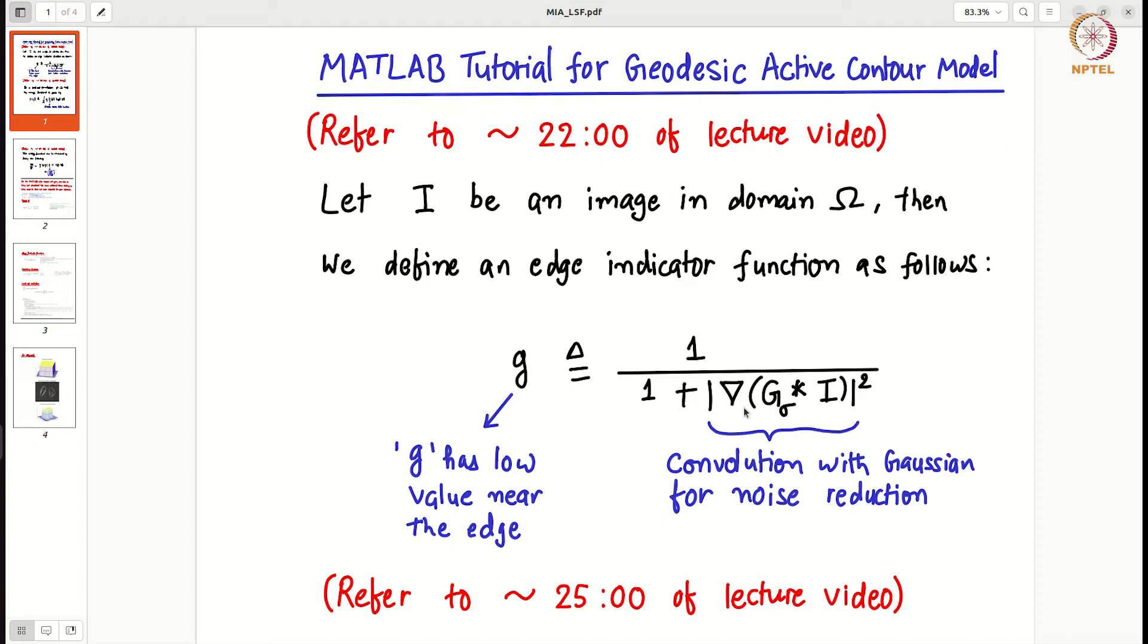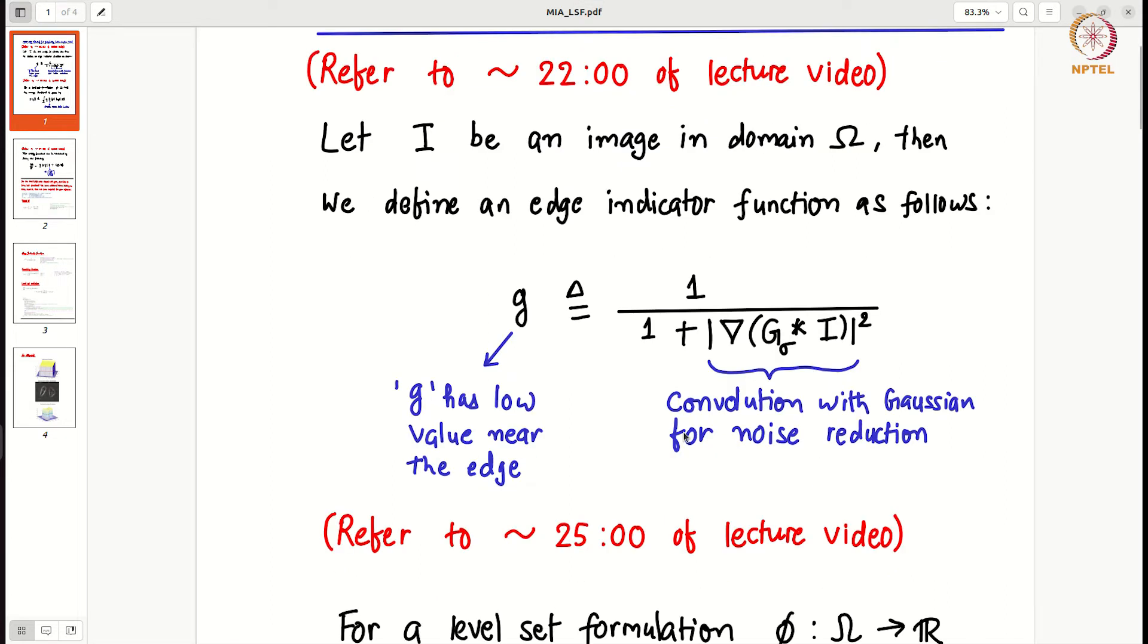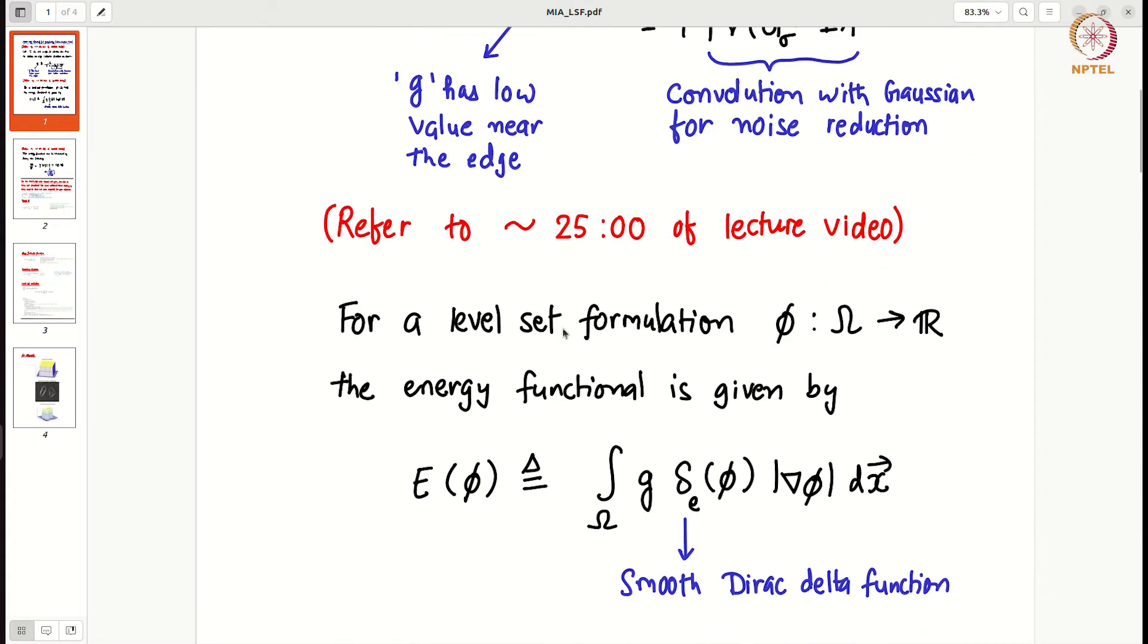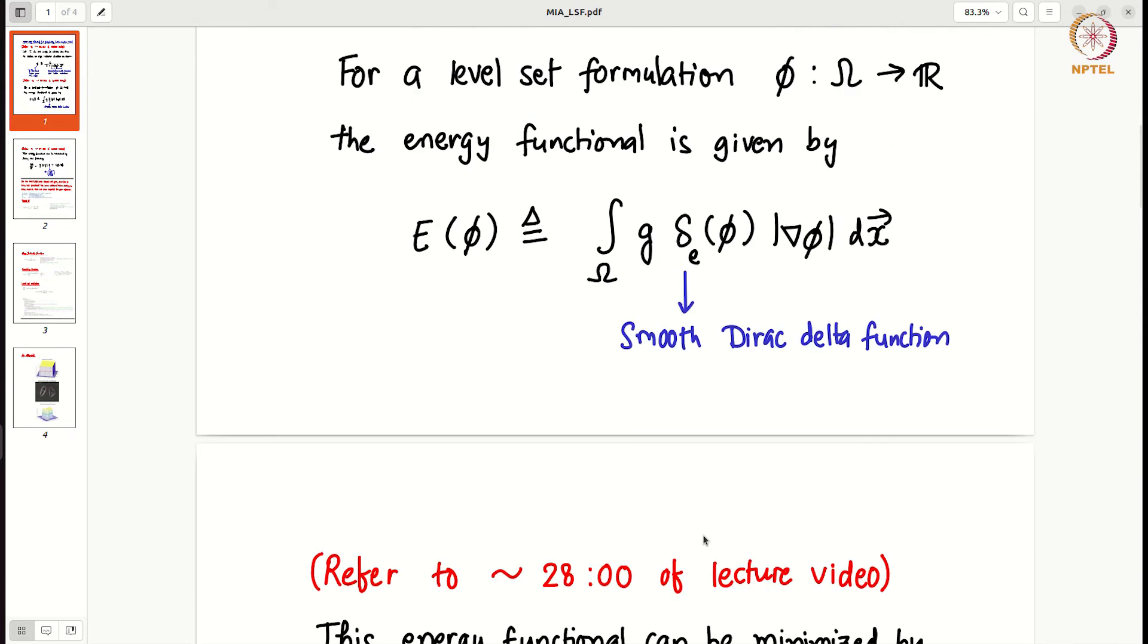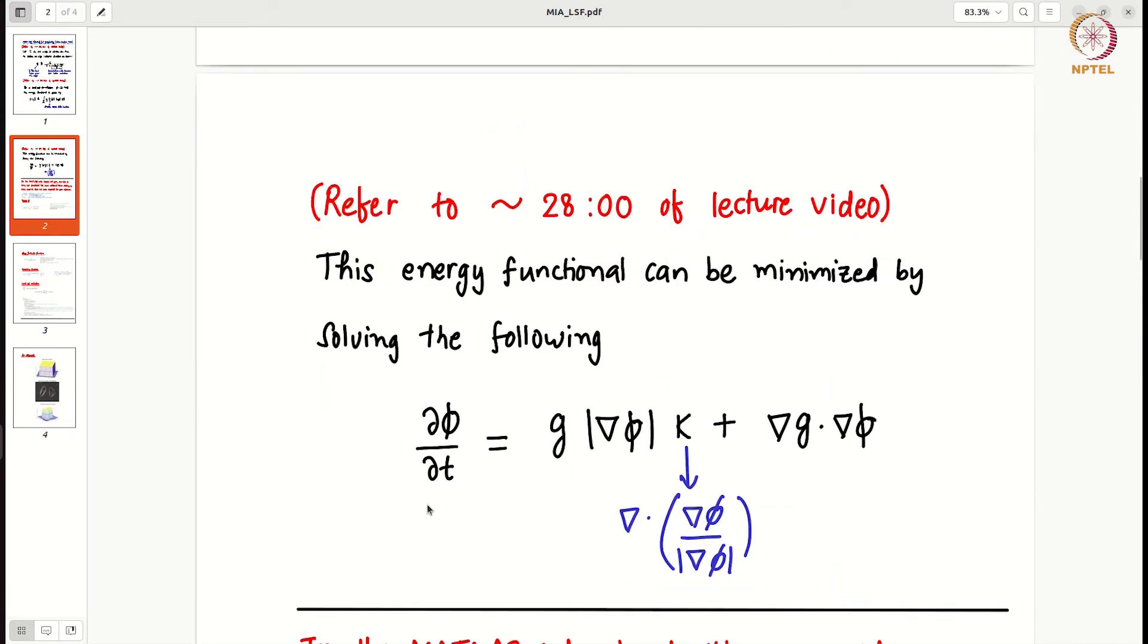So this G is used in the energy functional. Then we have some Dirac delta function also that we have to smooth, because we want our function to be differentiable at all times. So we use some smooth Dirac delta function. And finally we have this equation. We are not going to the details of how we got here and even what these terms mean, but you can refer to this timestamp of lecture video to understand what this equation means.